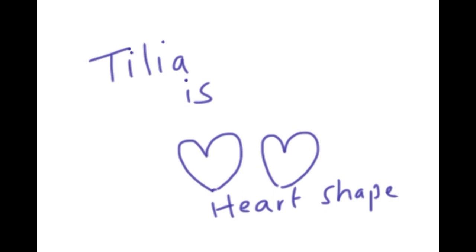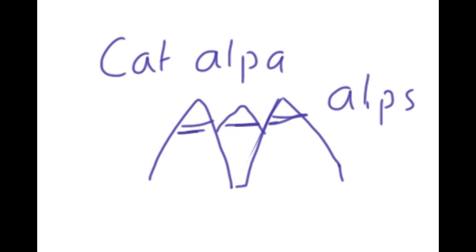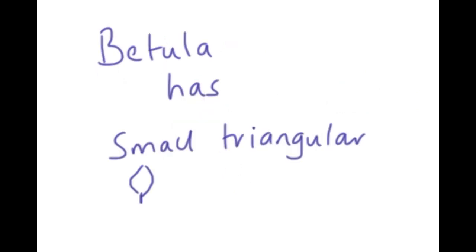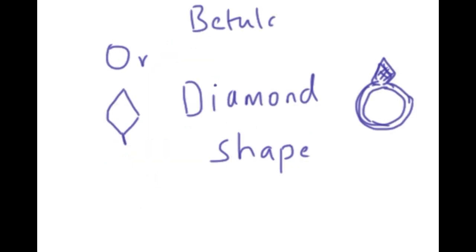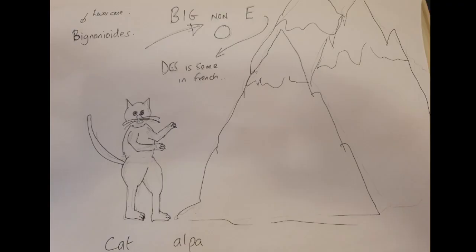For Catalpa, you might picture a cat at the beginning, then the Alps — triangular shape. For Betula — just drawing the triangle shapes. If you're a visual learner, this might work well. For Betula, taking a bet on roulette might help you remember it. You could do a memory map or mind map to help remember each part of the name. The more unusual and crazy the better — you're more likely to remember it.